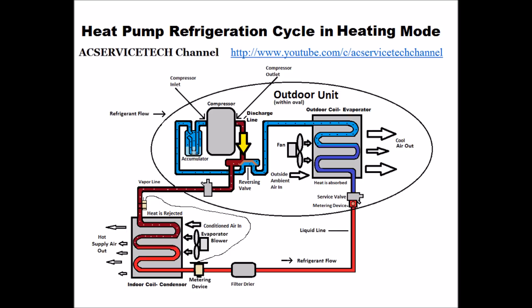It comes through the discharge line to the one side of the reversing valve — the side that has only one pipe attached to it. That is the discharge line. It goes through the reversing valve to the service valve and then out of the outdoor heat pump as a high pressure, high temperature vapor refrigerant. It then comes to the indoor coil, which is now the condenser coil.